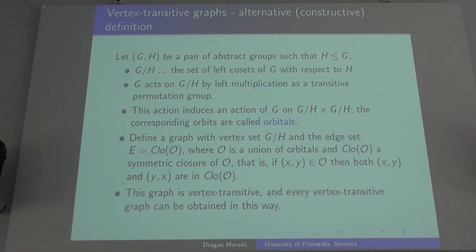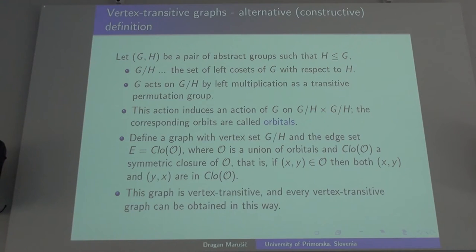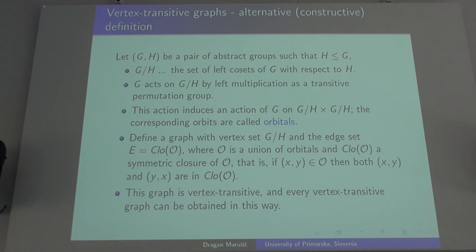These graphs are usually called orbital graphs, and basic orbital graphs are precisely those associated with a single orbital. If the single orbital is self-paired — that is, if UV is in there, VU is also in there — the graphs are arc transitive, or symmetric. If the orbital is not symmetric but you take the closure, the union of two inverse orbitals, what you get is a graph that is edge transitive but not arc transitive. Such graphs have been called half-arc transitive, but this is not essential for this talk.